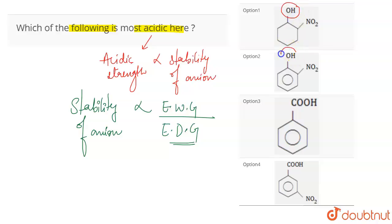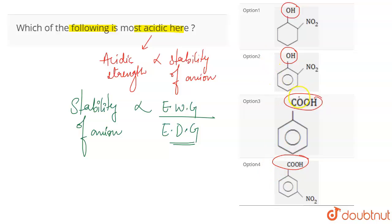If you look at the options given here, in two options you have OH in the ring, and in two options you have COOH in the ring. Talking about the first option, it is not aromatic, and the acidic strength of the COOH group is going to be more compared to the OH phenolic group. So option two cannot be the case, and option one also cannot be the case because there's no conjugation there.